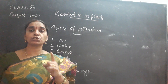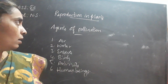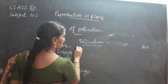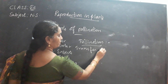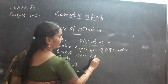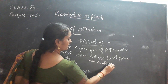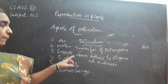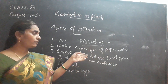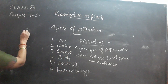Before going to the agents of pollination, you should know what pollination is. Pollination means the transfer of pollen grains from the anther to the stigma of a flower. This transfer may take place in the same flower or from one flower to another flower. If the transfer of pollen grains occurs in the same flower, it is called self-pollination.